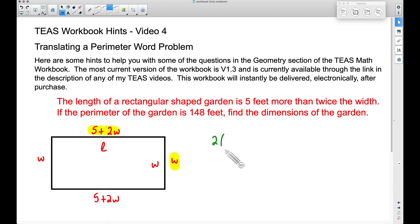A shortcut for the perimeter of a rectangle is you can take 2 times the length of 5 plus 2W, so essentially I'm adding this one and this one when I'm doubling it. And we have plus 2W. This is going to equal our perimeter, 148 feet.